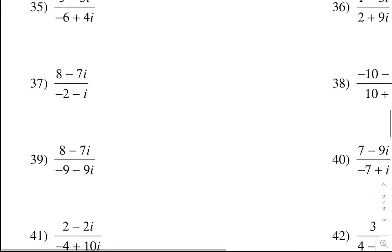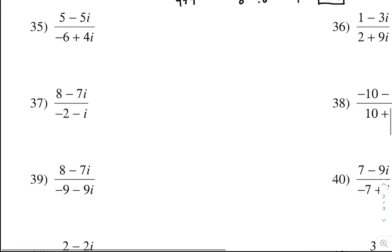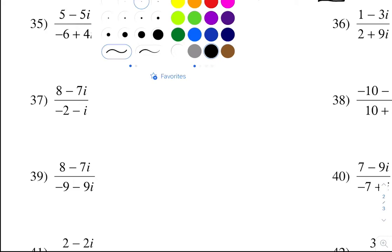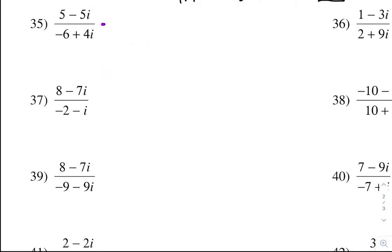Problem 35. Again, we're going to multiply by the conjugate — negative 6 minus 4i. But what you do to the bottom you do to the top, so you multiply by the conjugate. Since the denominator is negative 6 plus 4i, the conjugate has to be negative 6 minus 4i.